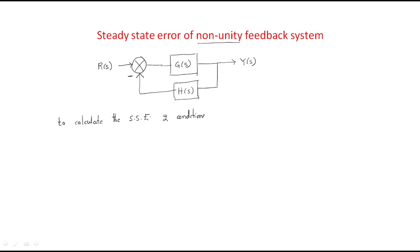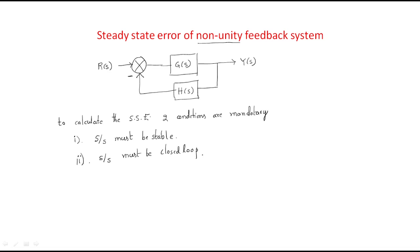The first mandatory condition is that the system must be stable. If it is an unstable system, the steady-state error cannot be calculated. The second condition is that the system must be a closed loop system. A third condition — unity feedback — is preferred but not mandatory.